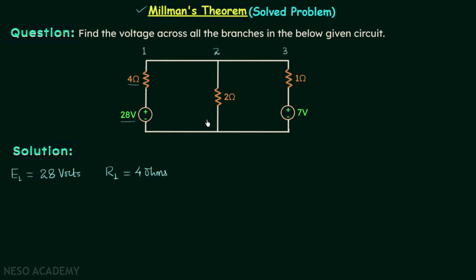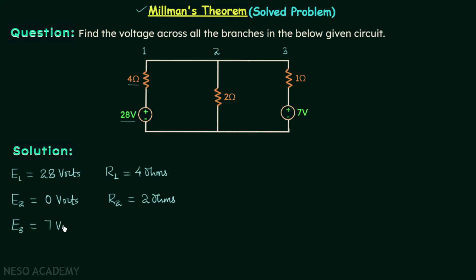Moving on to branch 2, we don't have any voltage source in this branch so E2 is equal to 0 volts, and the resistance value is equal to 2 ohms, so R2 is equal to 2 ohms. Now moving on to the final branch, branch number three — it has a voltage source with value 7 volts and resistance with value 1 ohm, so E3 is equal to 7 volts and R3 is equal to 1 ohm.